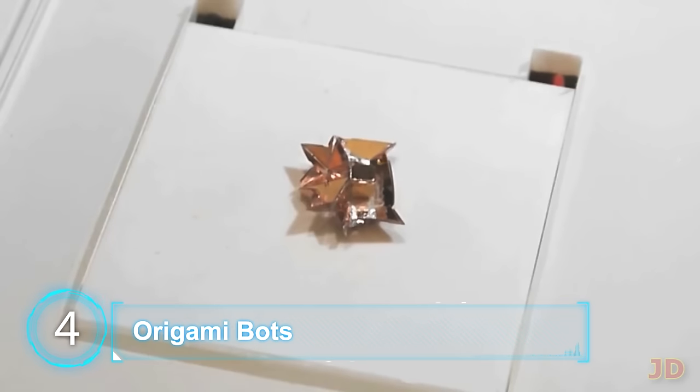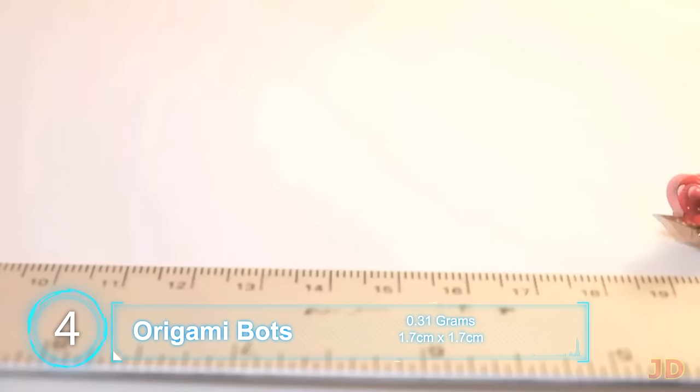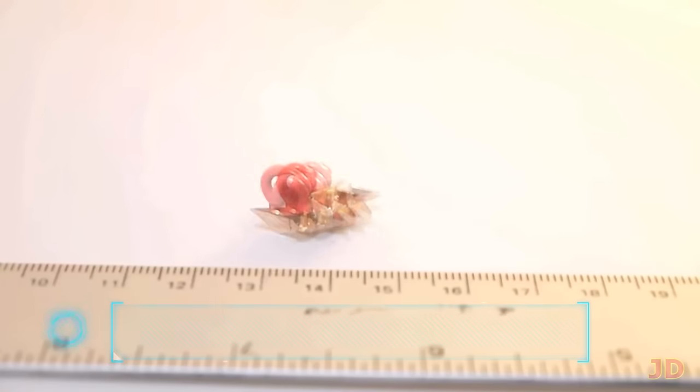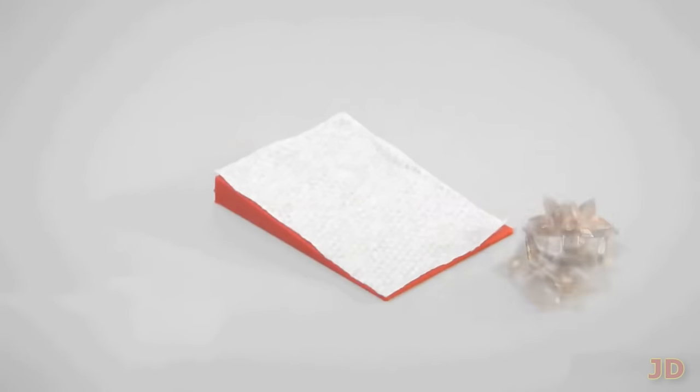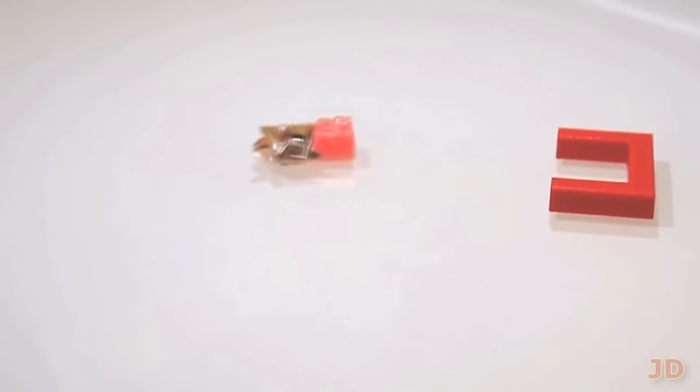At number 4, Origami Robots. Created by MIT, this bot self-assembles through a heating process and then it can run, carry objects, and even swim. Even though the bot has to be remotely controlled by magnetic fields, it will likely be automated in the future. The bots will likely be used for inspection in small areas such as pipelines or even machinery.